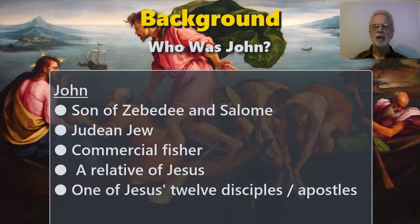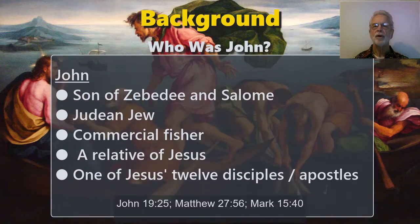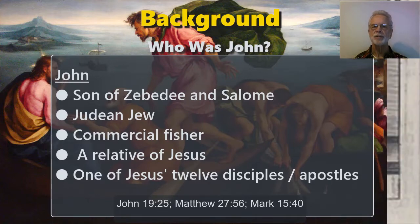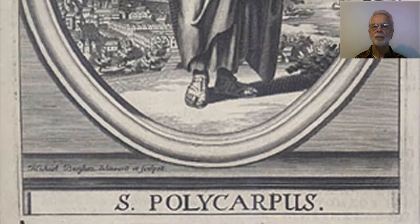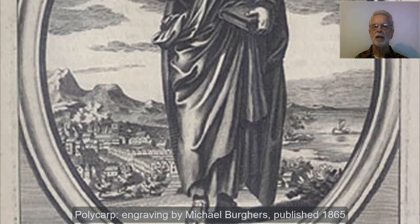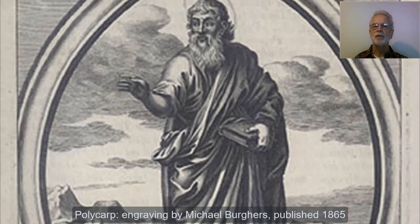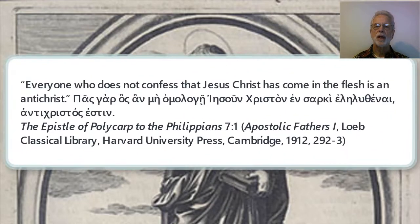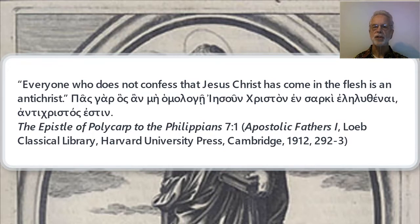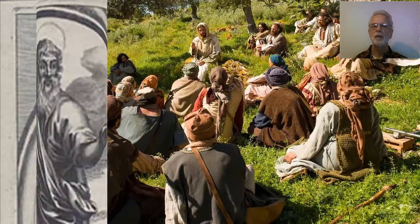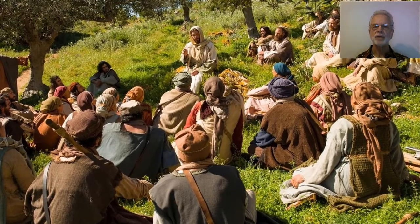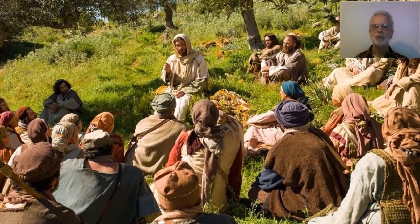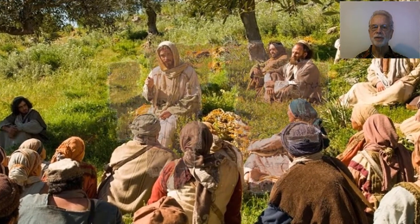Nearly all tradition and historical inquiry affirm that John was one of Jesus' twelve disciples. For example, Polycarp, who lived from year 69 into the second century — a Christian bishop of Smyrna who had been a disciple of John — cited 1 John chapter 4 when he wrote: 'Everyone who does not confess that Jesus Christ has come in the flesh is an Antichrist.' Thus John was an ear and eyewitness to Jesus' travels, teaching, discourses, deeds, death, and resurrection.